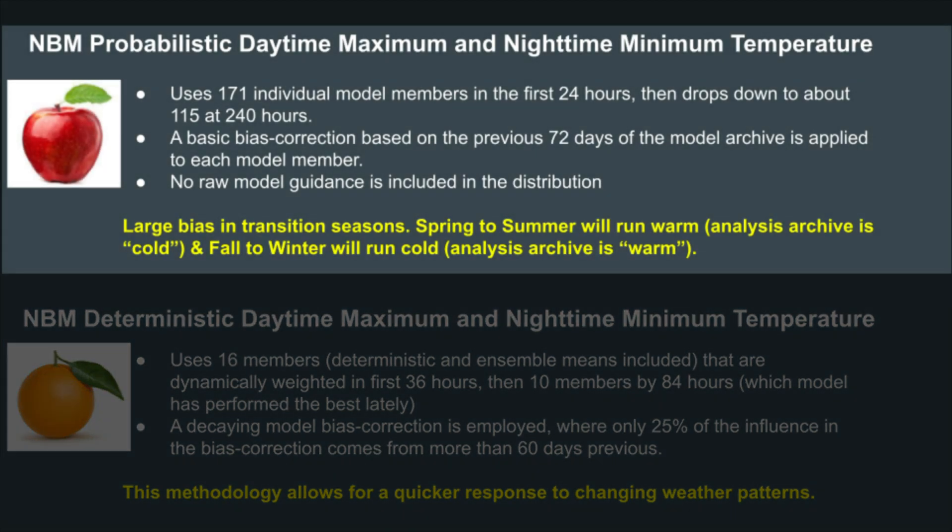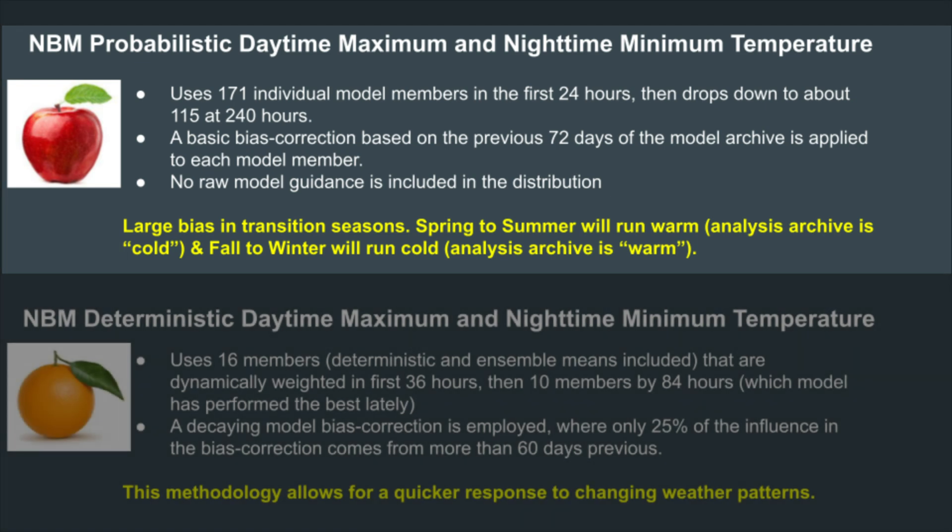The probabilistic fields use the full 171 members in the first 24 hours, but drop to around 115 after that and uses a basic bias correction out to 72 days.